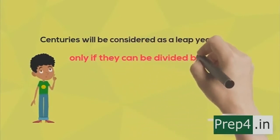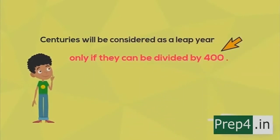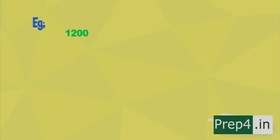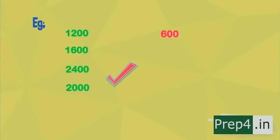To understand this concept, let's look at an example. Years like 1200, 1600, 2400, and 20,000 are considered leap years. But 600, 1900, 2100, and 2200 are not. So I think you now understand what a leap year is.